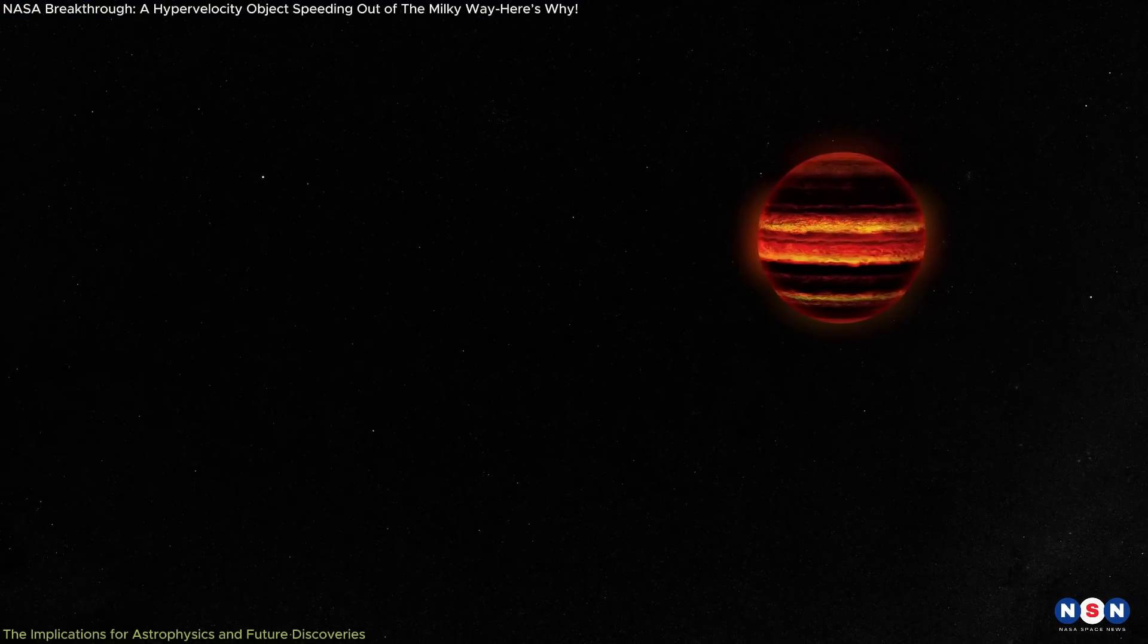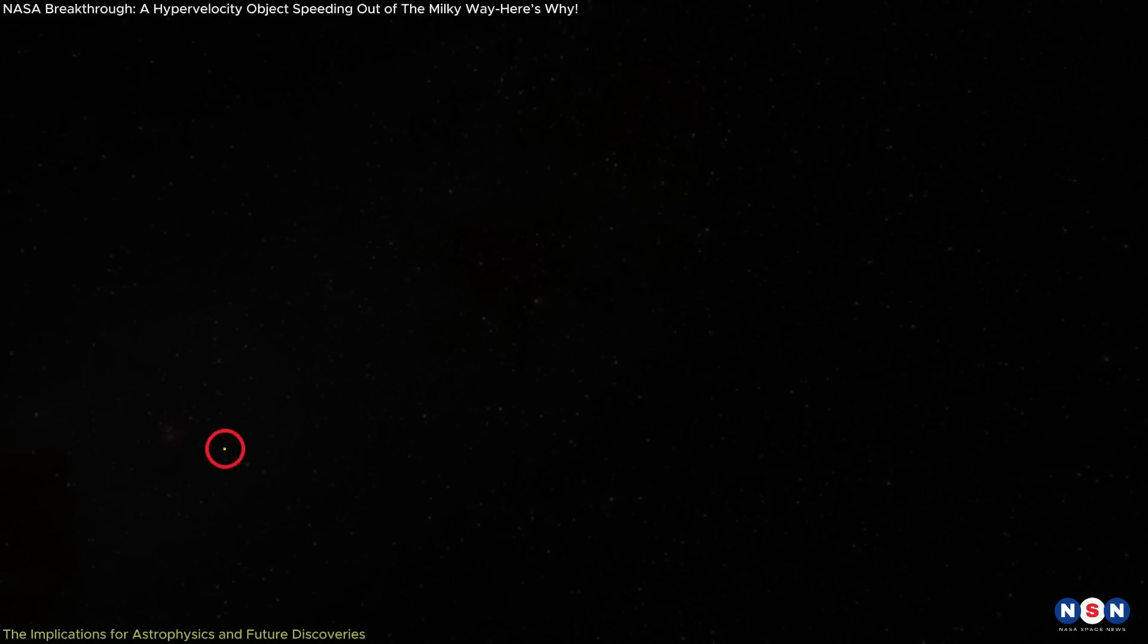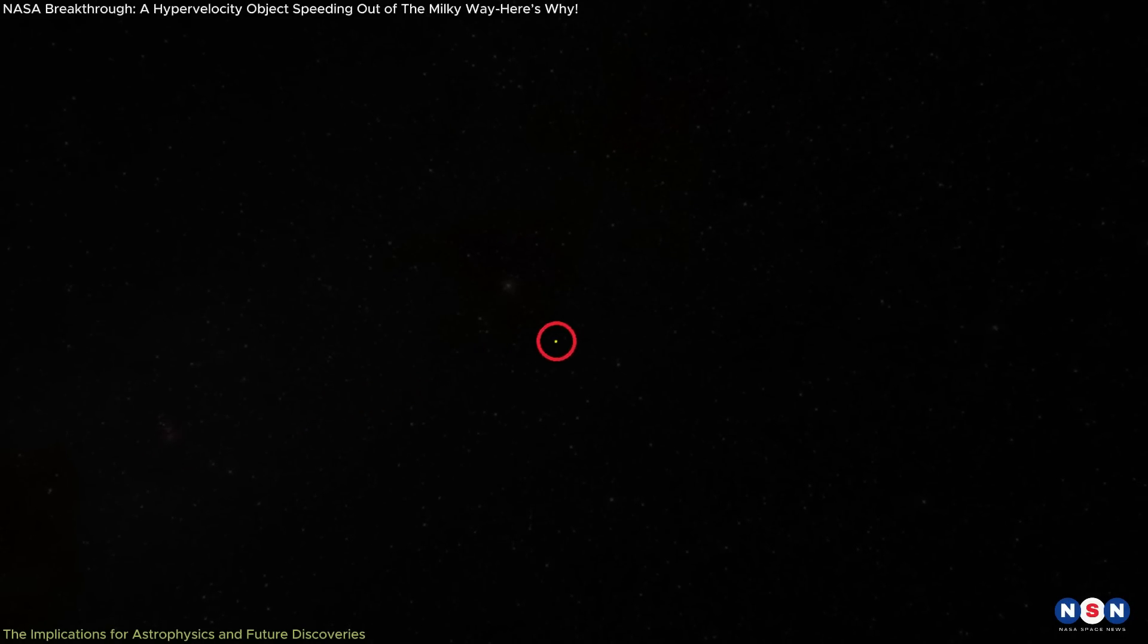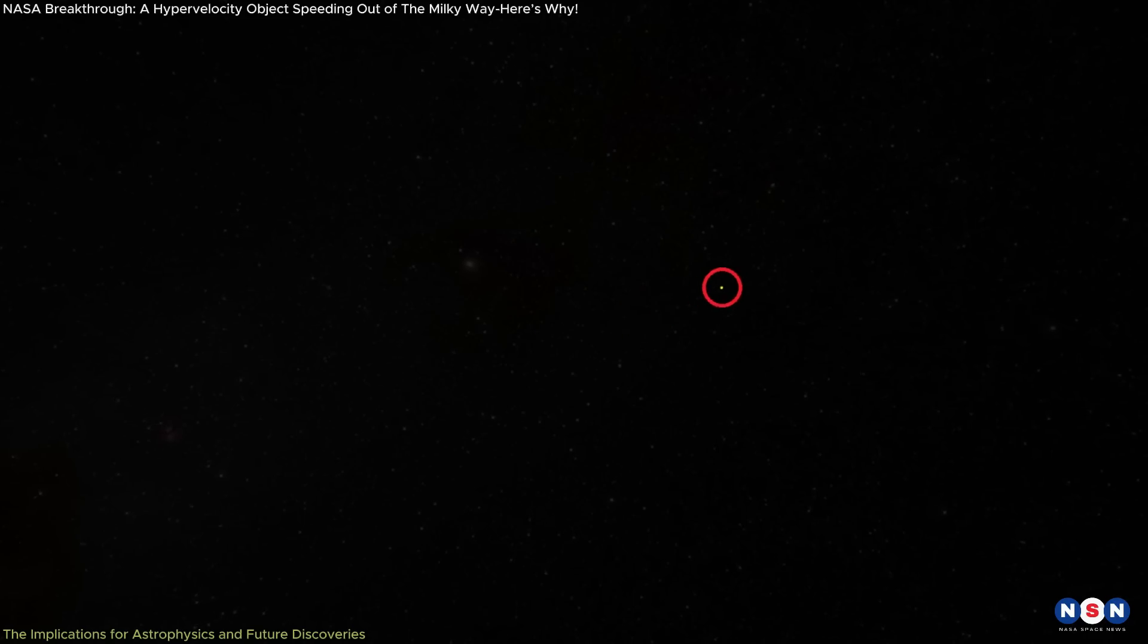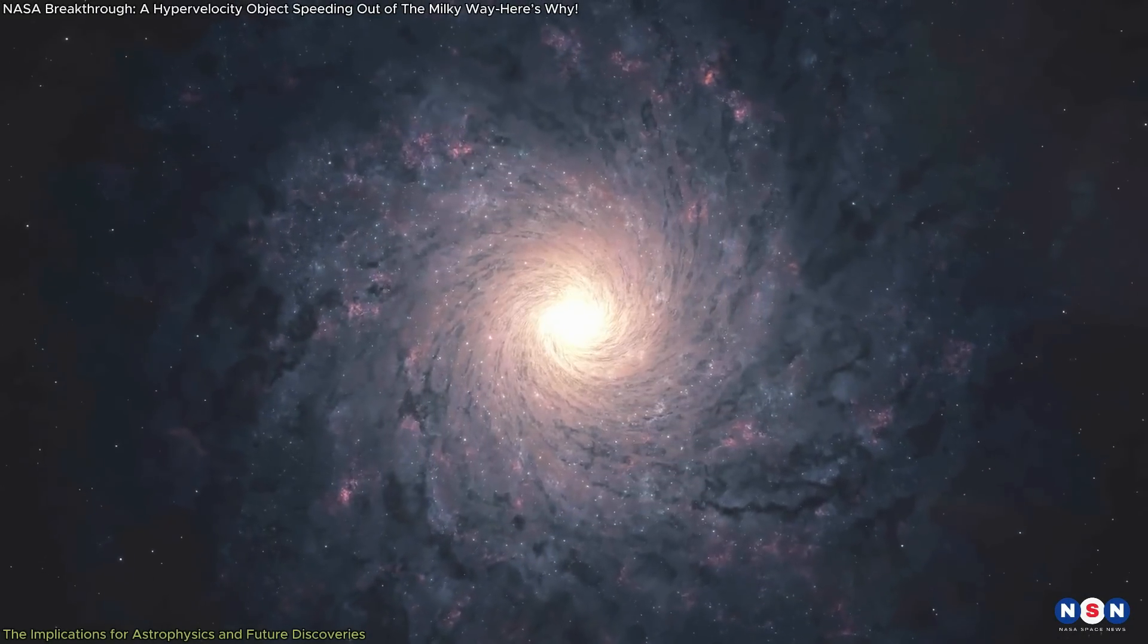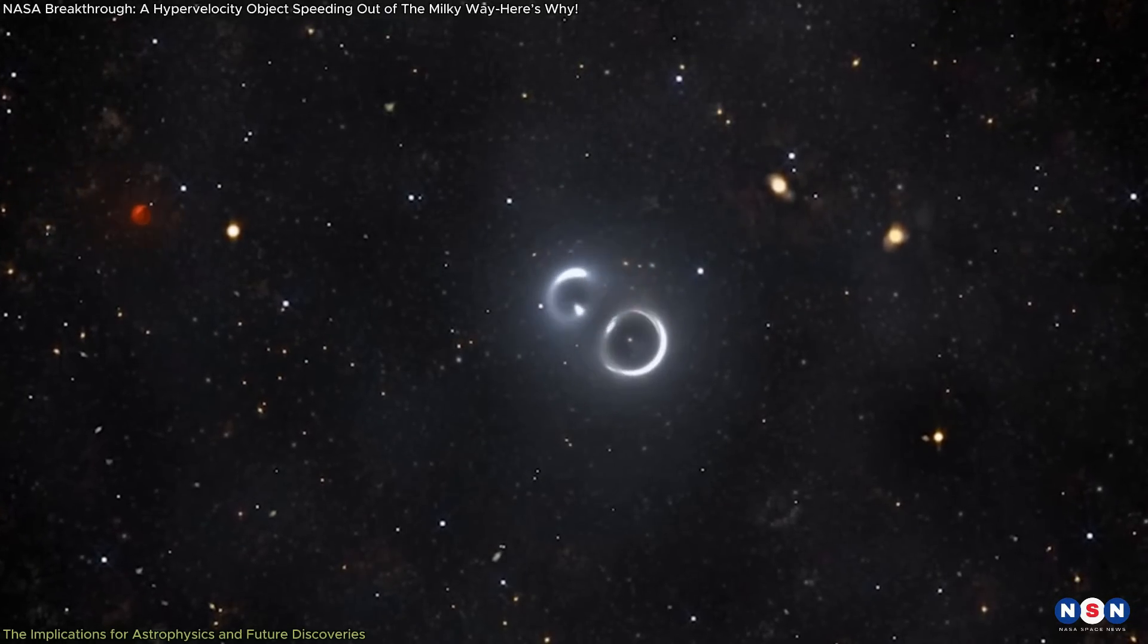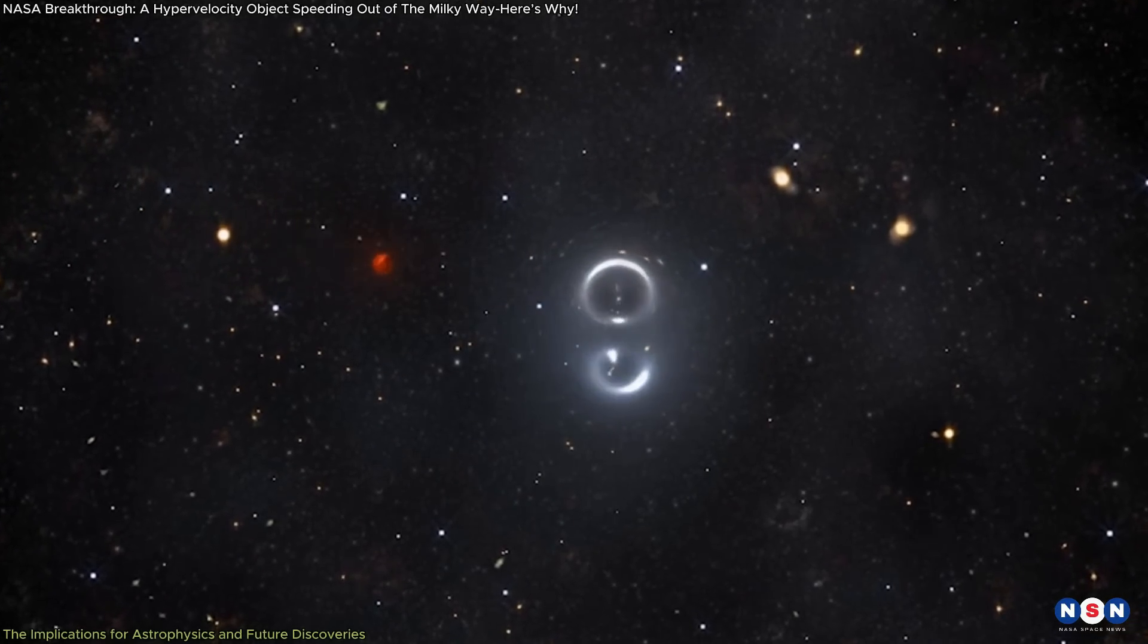In addition to brown dwarfs, several hypervelocity stars have been observed. For example, in 2010, a star with a name starting with HE was found traveling at an astonishing 1.6 million miles per hour and was thought to have been ejected from the center of the Milky Way. Similarly, two stars named LAMOST, discovered by Chinese astronomers, are also unbound hypervelocity stars, demonstrating the variety of objects experiencing such extreme velocities.